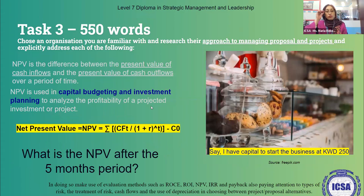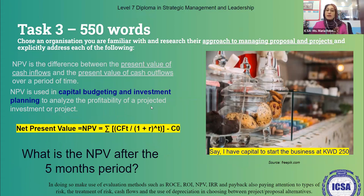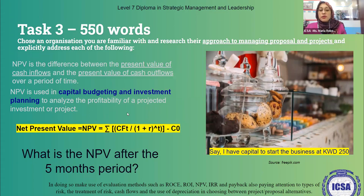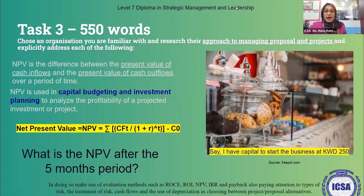Now let's go to NPV. Net Present Value compares the present value of cash inflows and the present value of cash outflows over a period of time — which could be a year, five months, or a quarter. NPV is used in capital budgeting and investment planning. By using NPV you'll be able to analyze the profitability of a projected investment. There's a complex formula, but we'll make it simple. The Excel sheets in the portal already have the formulas, but it's important to understand what's going on behind them.